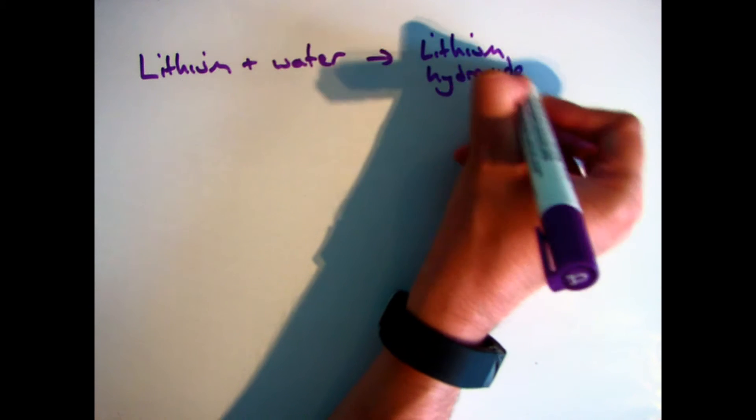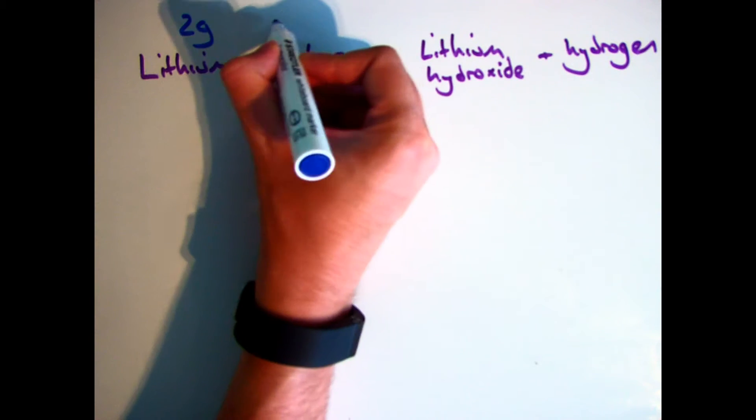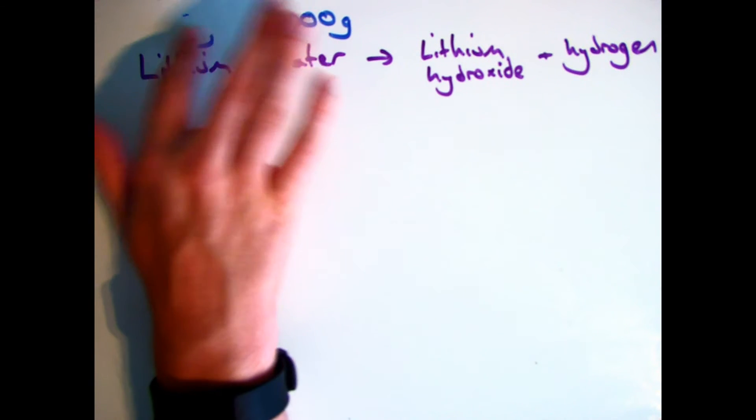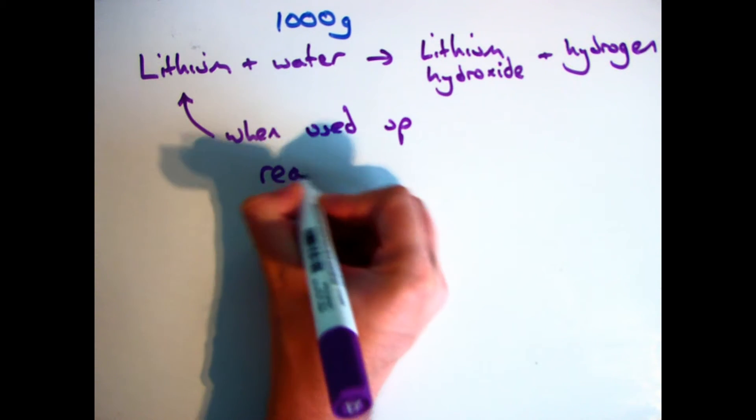So any reaction will have something called a limiting reactant. For example, if I had lithium and reacted it with water to make lithium hydroxide and hydrogen, the limiting reactant is the one that is used up first. So if I had two grams of lithium and 100 grams of water and the lithium ran out first, that is what we call the limiting reactant.